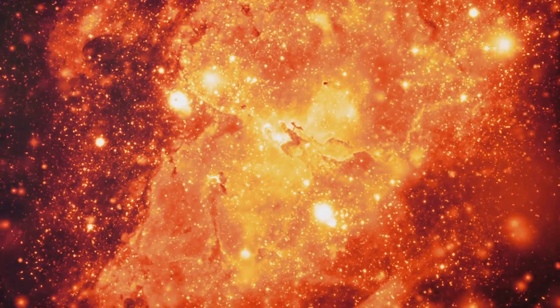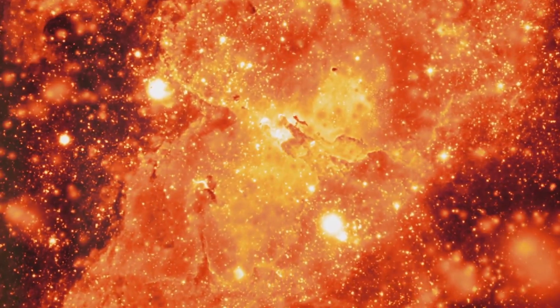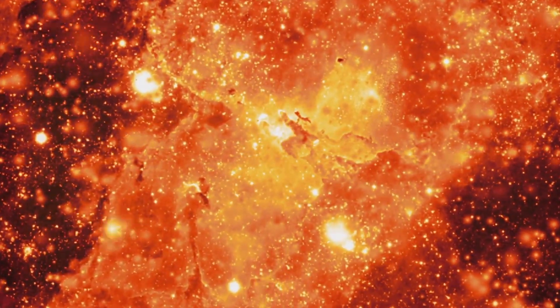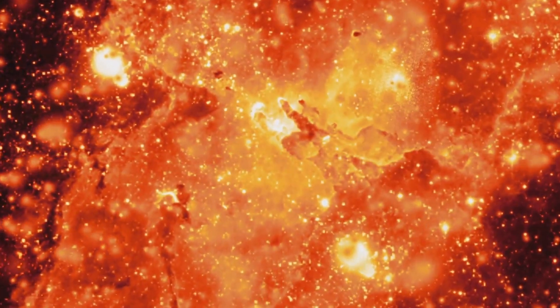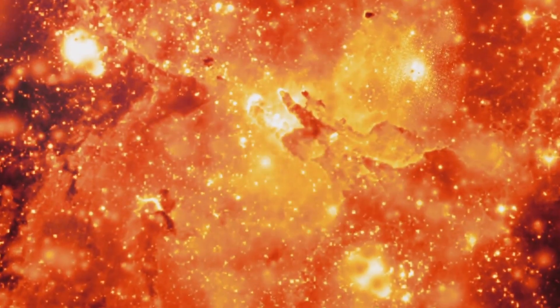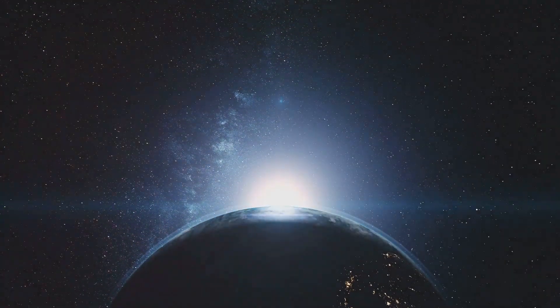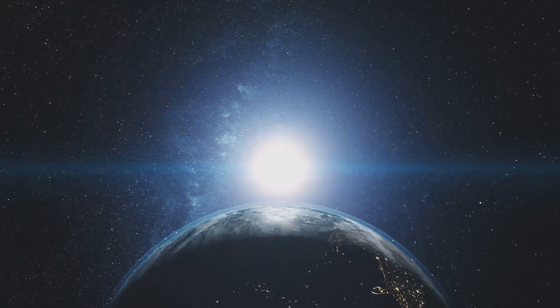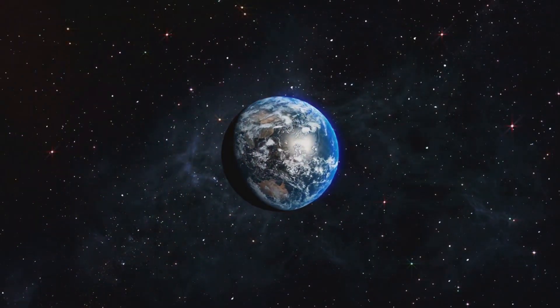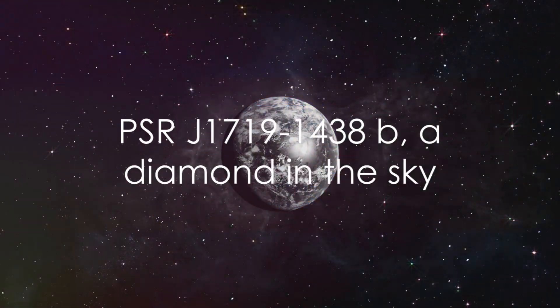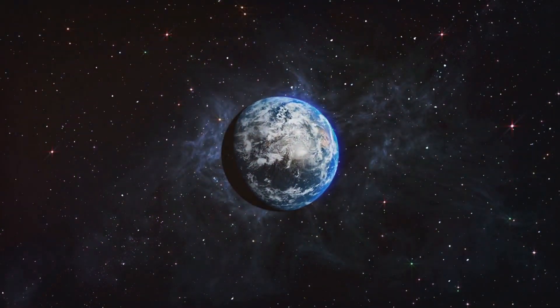This transformation from star to diamond planet is a testament to the astonishing processes at work in our universe. It's a story of cosmic cannibalism and rebirth, of unimaginable pressures, and of elements forged in the heart of stars. And so, we come to appreciate the grandeur and diversity of the cosmos, a place where planets of diamond can exist, where the ordinary becomes extraordinary, and where every discovery invites us to question and wonder. PSRJ-1700-191438b, a planet that adds a whole new meaning to the term diamond in the sky.